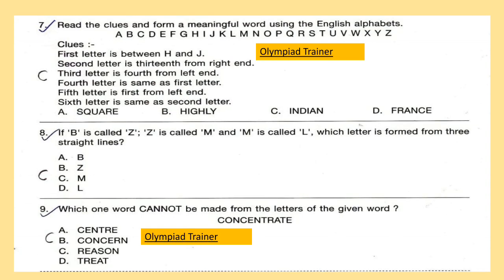Question 7: Read the clues and form a meaningful word using the English alphabets. Clues are: first letter is between H and J, second letter is 13th from right, third letter is fourth from left, fourth letter is same as first letter, fifth letter is first from left, and sixth letter is same as second letter.